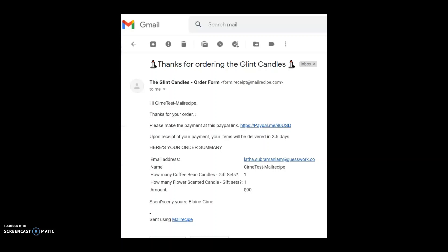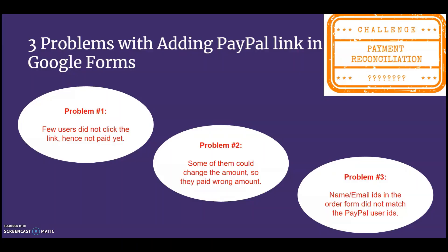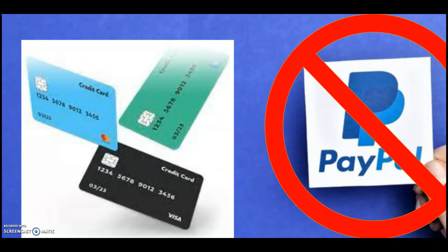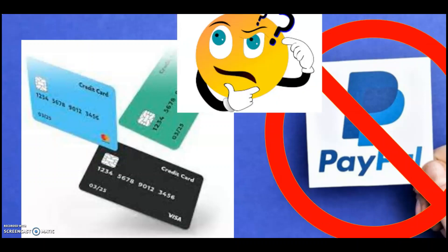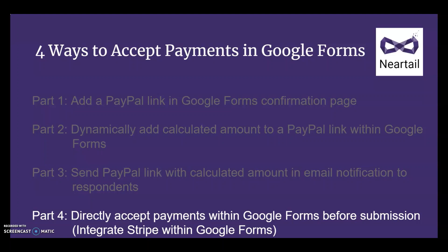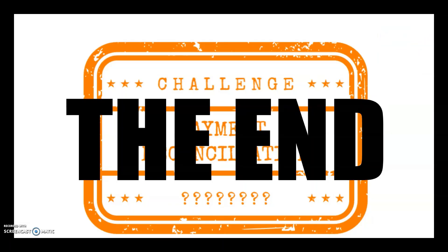Isn't that amazing? The notification is helpful for her customers to have a record of what they ordered and it'll be easy for them to pay the right amount without manual mistakes. But again the manual verification is still on Elaine — she still has to go through the same pain of reconciliation of customer and payment records. That reconciliation problem doesn't go away for her. But what if the corporate customers did not want to pay via PayPal? What if they want to pay with a credit card? Stay tuned for part four — the final video in the series — where I'll show you how to integrate Stripe within Google Forms, allow your customers to pay without leaving the form, and automatically get the payment reference recorded in the Google Form itself. That'll surely put an end to the payment reconciliation problem. See you there!